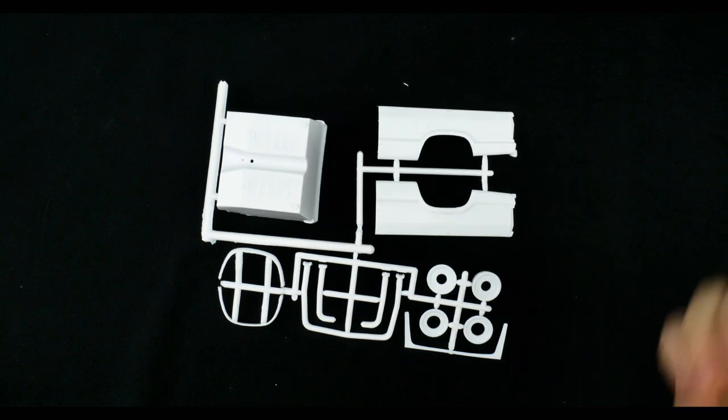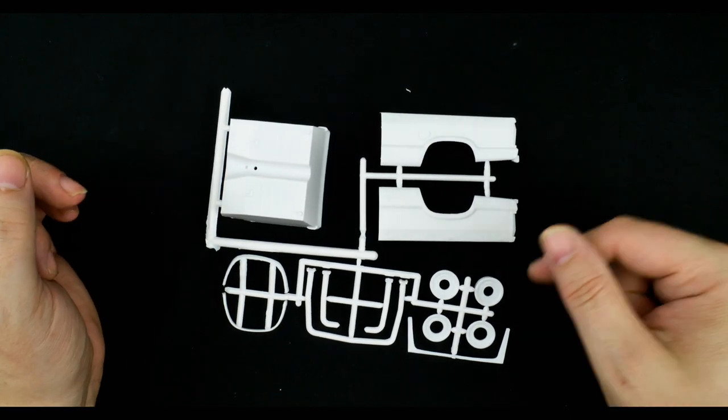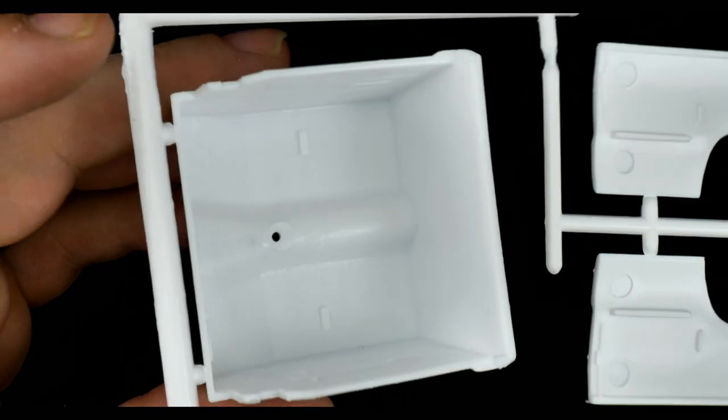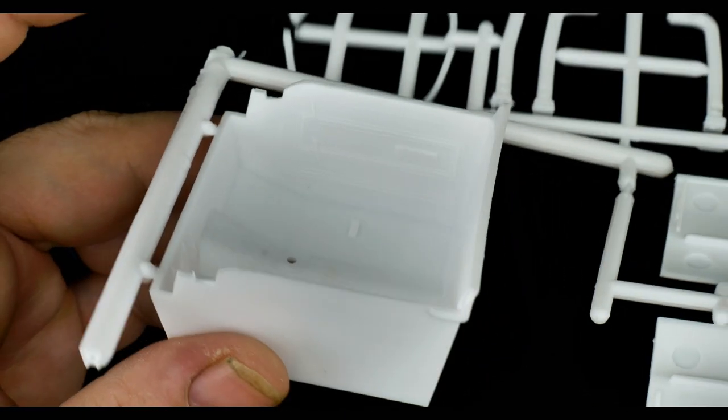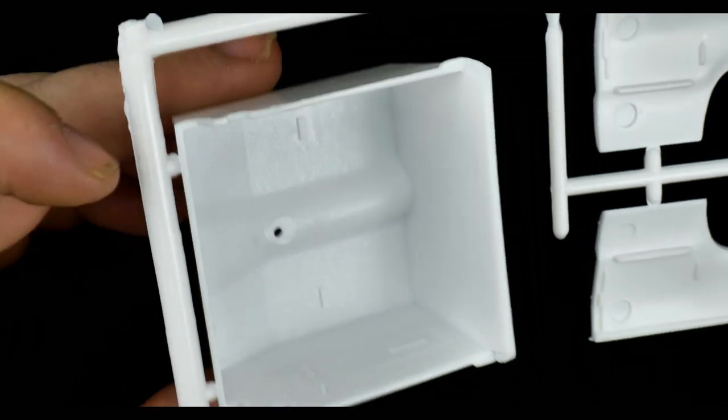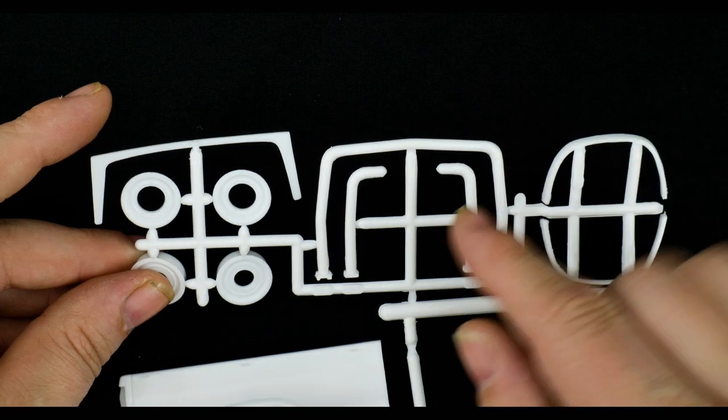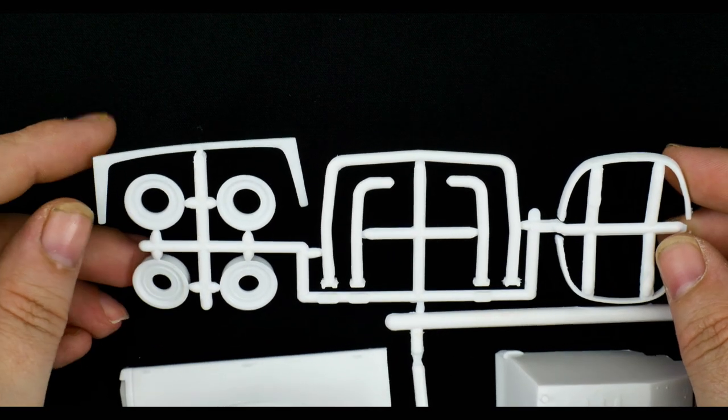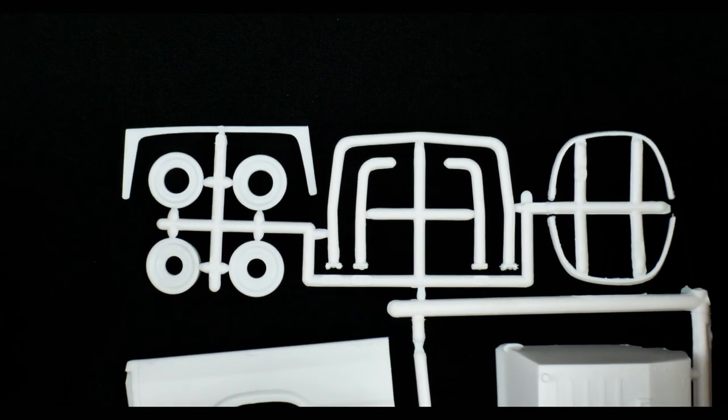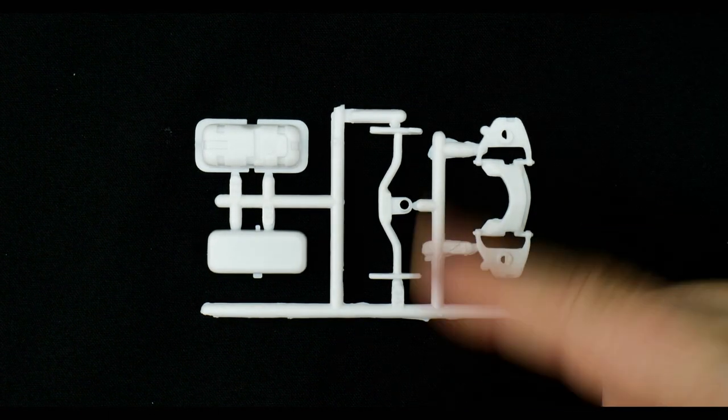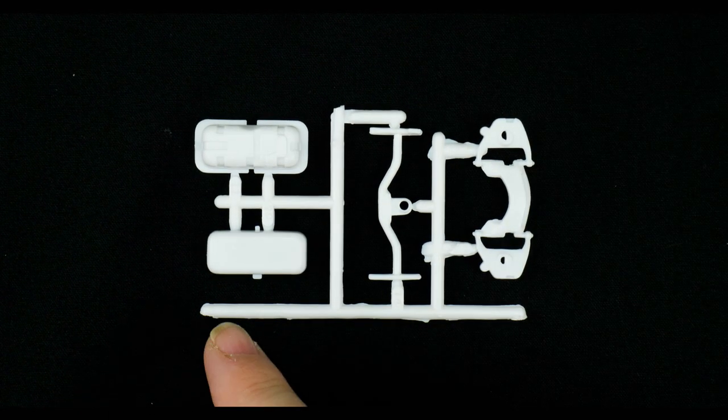And moving on to the next parts tree. This has the interior, wheel backs, some custom pieces, roll bar, and the interior bucket which is pretty light on detail. But again, this is the fender flares, rear wheel bar for the bed. And one last parts tree. You have the front suspension crossmember, whatever that piece is. And it looks like a fuel tank.